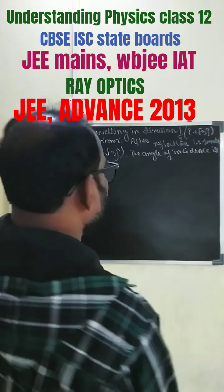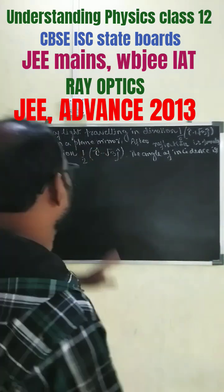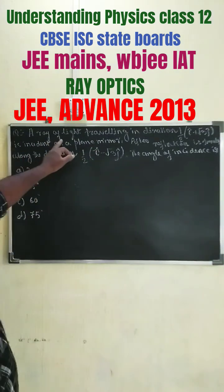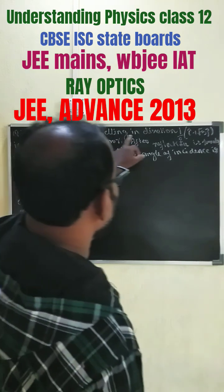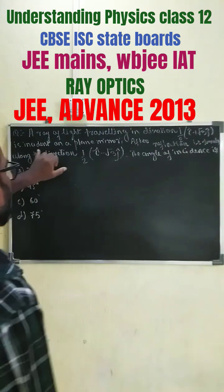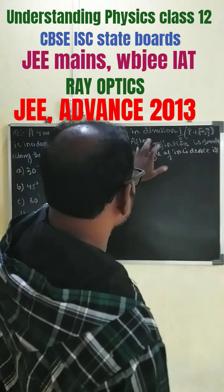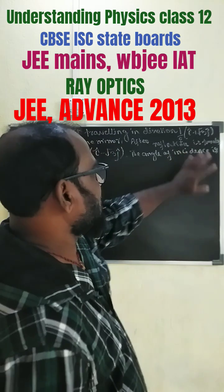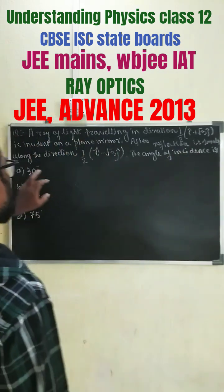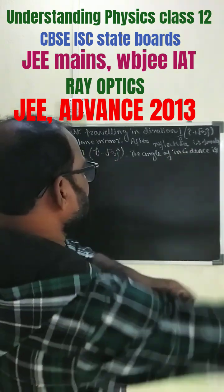Hello, I am Arun Kumar. This is a question from JEE Advanced. A ray of light travelling in a direction is incident on a plane mirror and after reflection is travelling along another given direction.